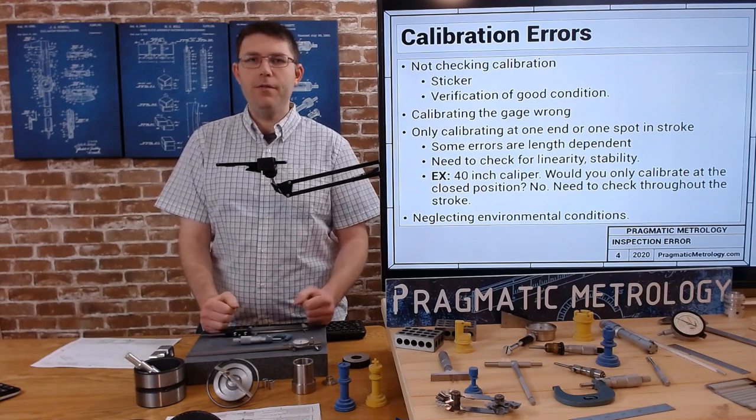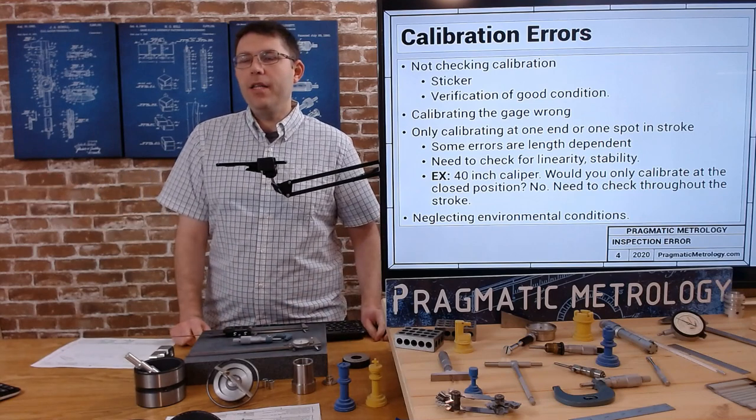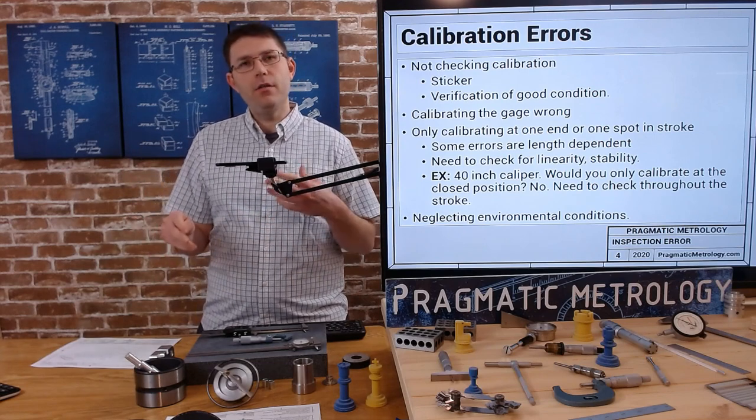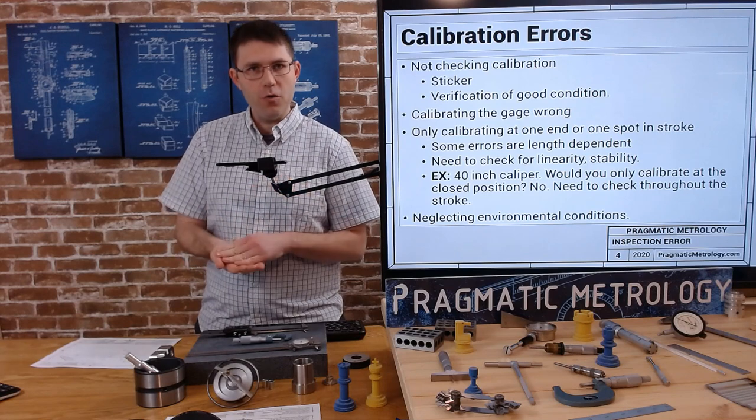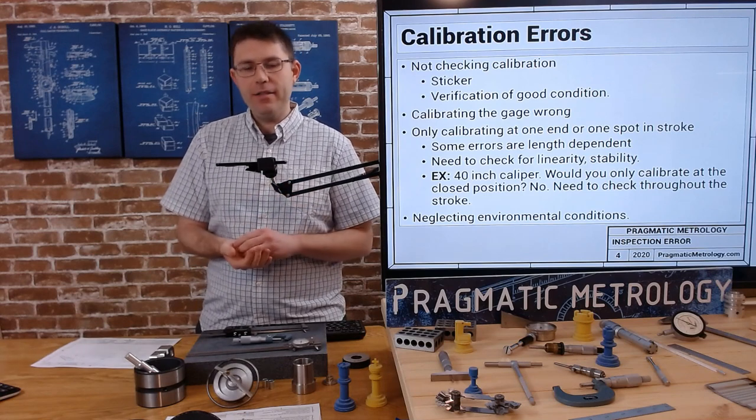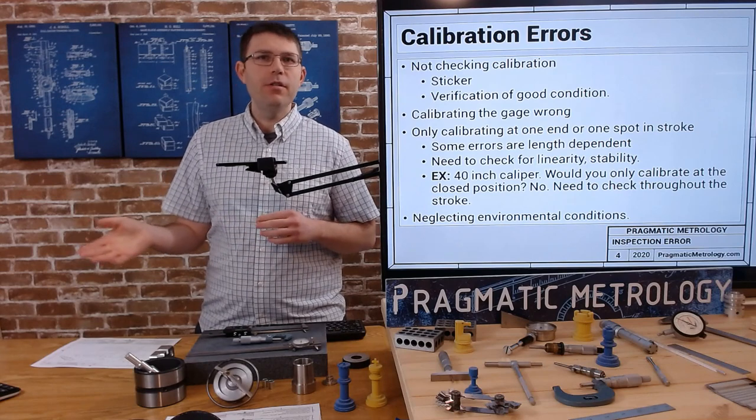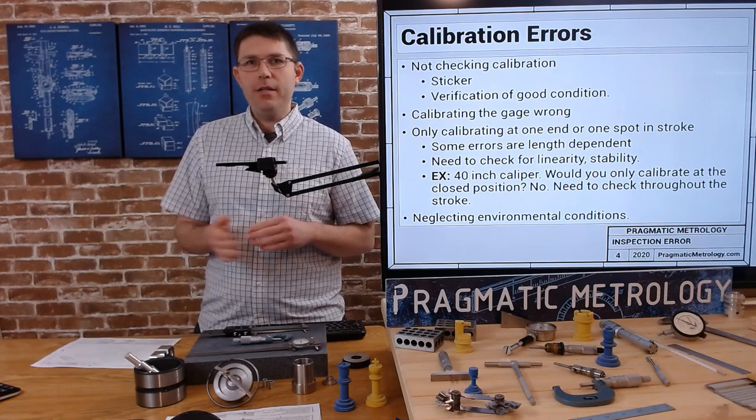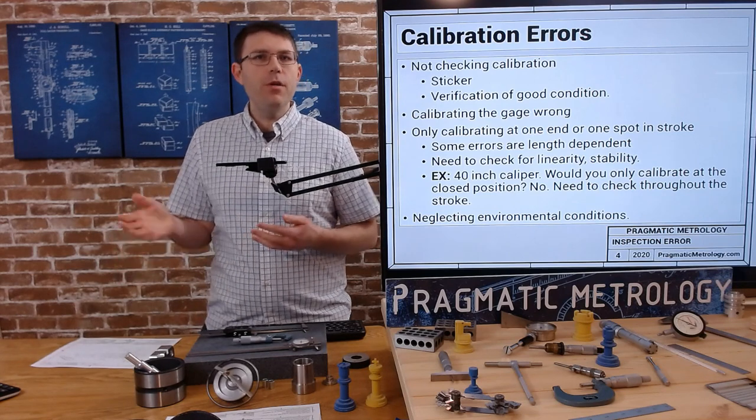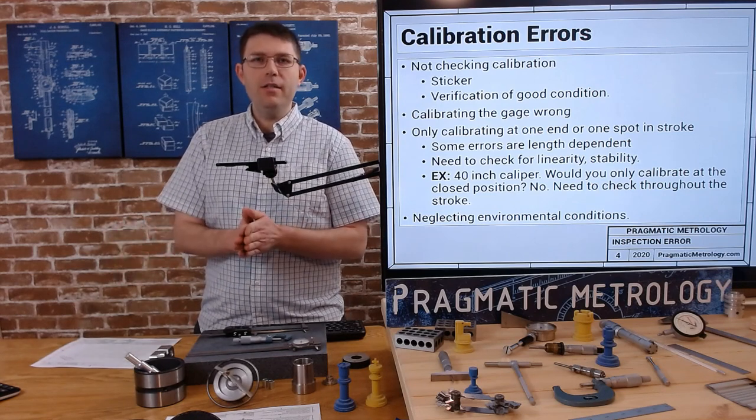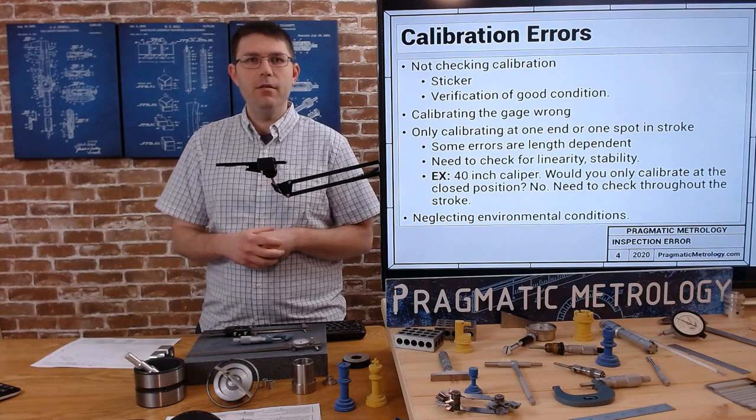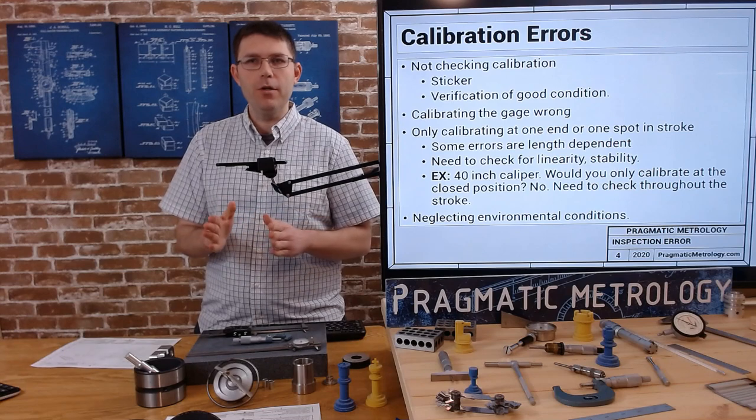Neglecting the environmental conditions when you're calibrating - every calibration should be under a controlled environment, a consistent temperature. You don't want to calibrate these things at 100 degrees Fahrenheit in the summer and 60 degrees Fahrenheit in the winter. You want to try and calibrate things at the same temperature year-round and use them at the same temperature year-round within some allowable margin.